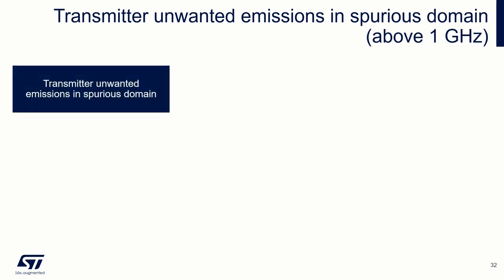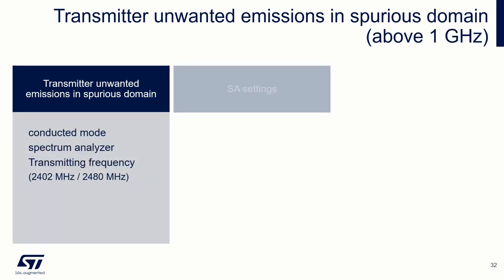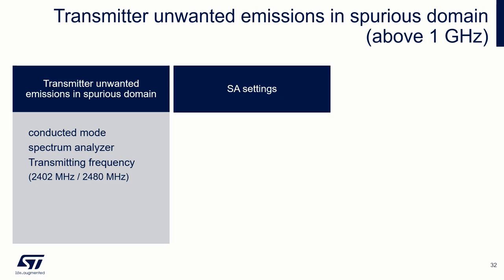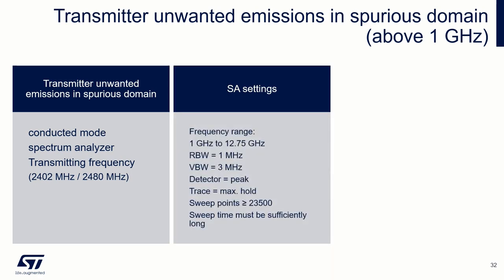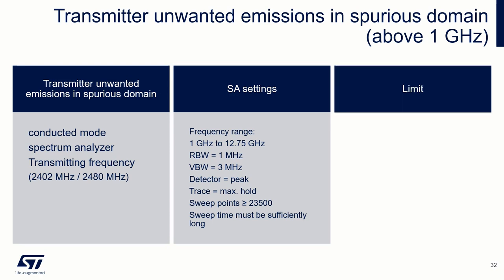Now we focus on spurs above 1 GHz. This measurement is very similar to the previous one, but in the frequency range from 1 GHz to 12.75 GHz. RBW is now 1 MHz and VBW is 3 MHz. The sweep points should be equal to or larger than 23,500. The limit is the same for all frequencies: minus 30 dBm over 1 MHz.